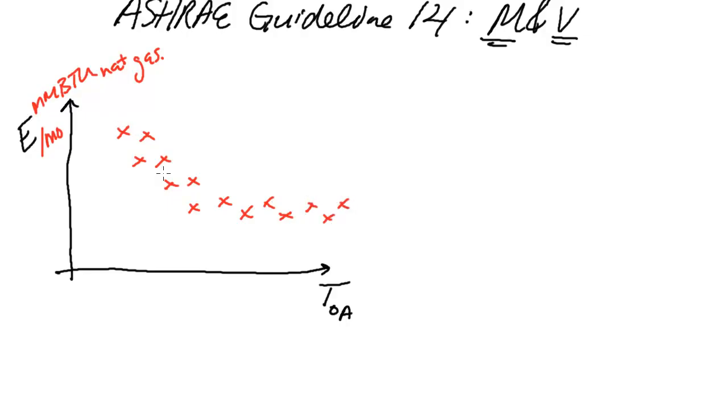And this shape is very common. It sort of looks like a hockey stick, where at some point this section over here is flat, and over here there's some sort of slope to it. And if you want to be more particular about it, this section here is independent of the outdoor air temperature, and this section is dependent on the outdoor air temperature.